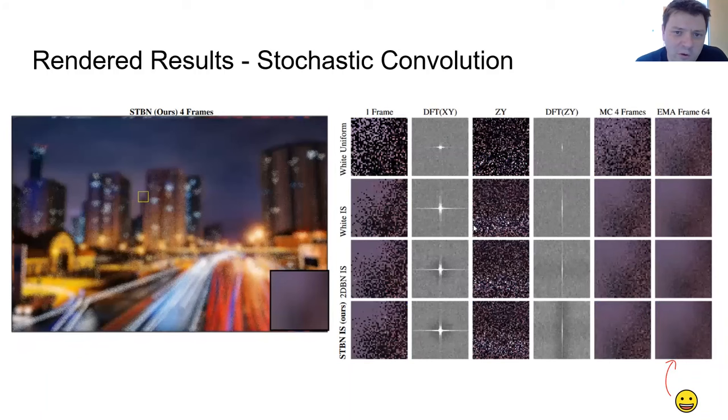Here we use different types of noise and stochastic convolution and here what we're doing is we're simulating bokeh by doing a convolution of the image against a heart-shaped kernel for like a heart-shaped aperture for a camera lens. But we're only doing one sample per pixel of that convolution kernel. And so we're using different types of noise to select which sample to take within that kernel.